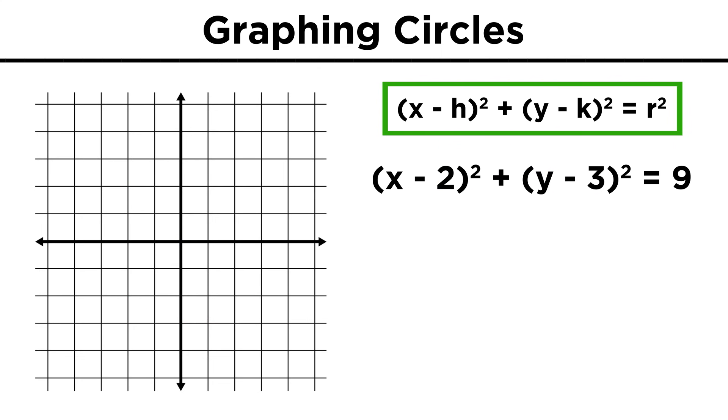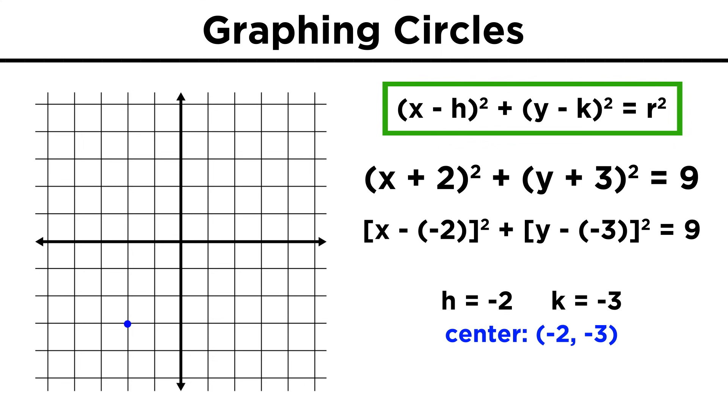Now let's look at one with h and k terms present. Here, the only thing we have to remember is that it's x minus h and y minus k, so if we have x minus two and y minus three, the center will be at two, three, both positive, because h equals two and k equals three, according to the equation. If we had x plus two and y plus three, that would be the same as x minus negative two and y minus negative three, so in that case the center would be at negative two, negative three.